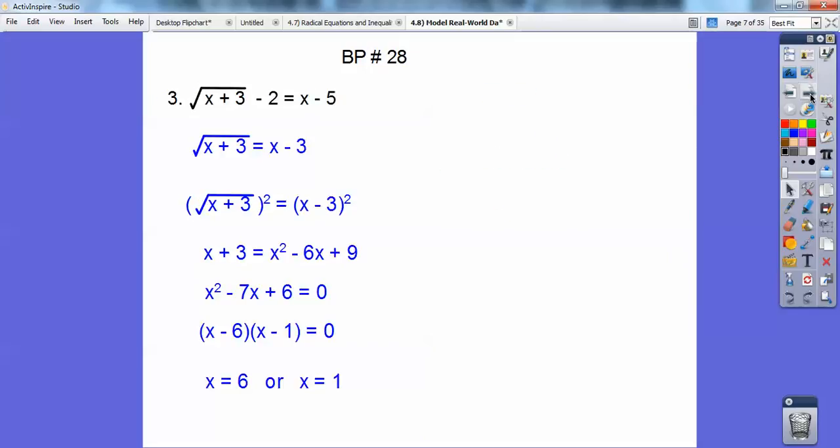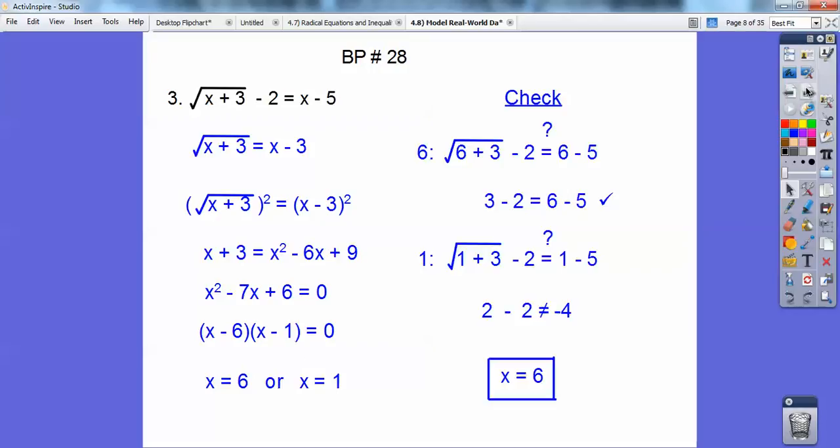Here's number three. I've got a plus two to both sides, and then square both sides, and then I get six or one. And I'm going to check six and one. It looks like six checked out, but one doesn't check out, so the answer is six.